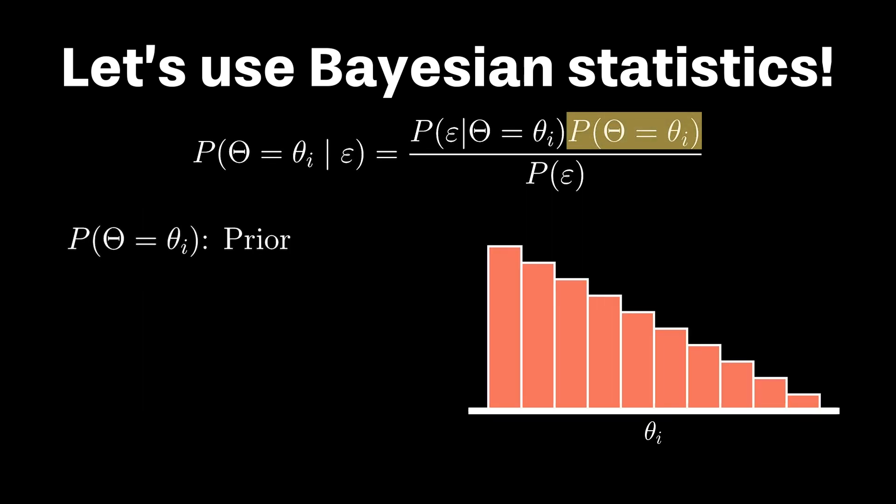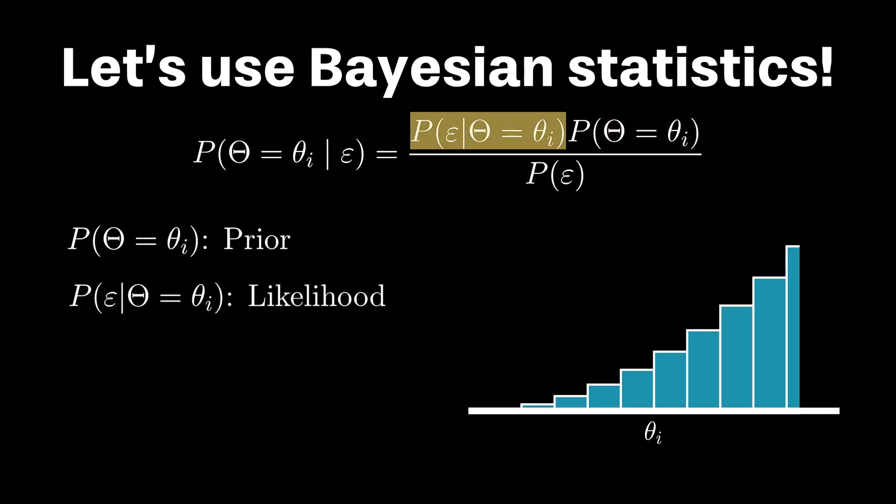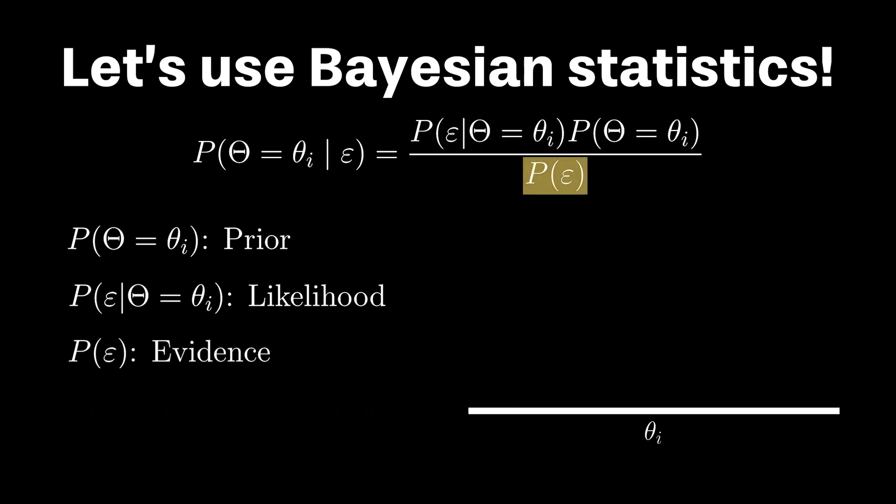Our prior, or our initial guess of the probability that theta sub i is the correct parameter value; our likelihood, or the chance we would have observed our available data, given that the model parameter equaled theta sub i; and lastly, our evidence.